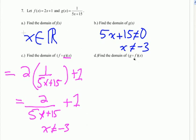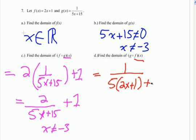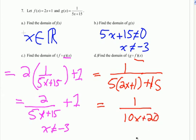Now the reverse composition, g of f of x. Since f of x is a linear function, its domain is all real numbers. Plugging f of x into g of x gives 1 over 5 times (2x plus 1) plus 15. Distributing and combining like terms gives 1 over 10x plus 20. Setting the denominator equal to zero, subtracting 20 and dividing by 10, we get x can't equal negative 2. Since the original f of x had no restriction, this is the only restriction on the composition.